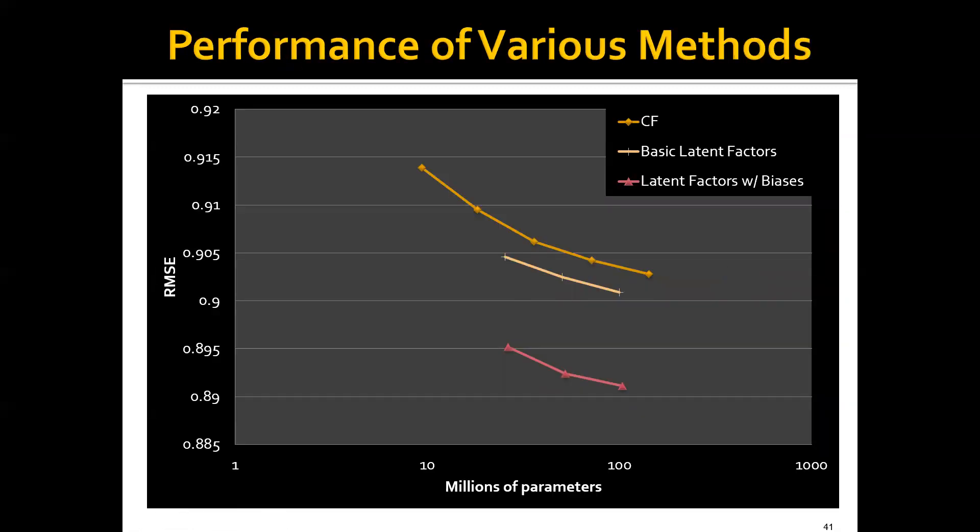Let's see how we do. This is the performance of various methods. If we use the collaborative filtering method with the user and item biases, we are around here. If we use the basic latent factor models, we are already outperforming the collaborative filtering approach.